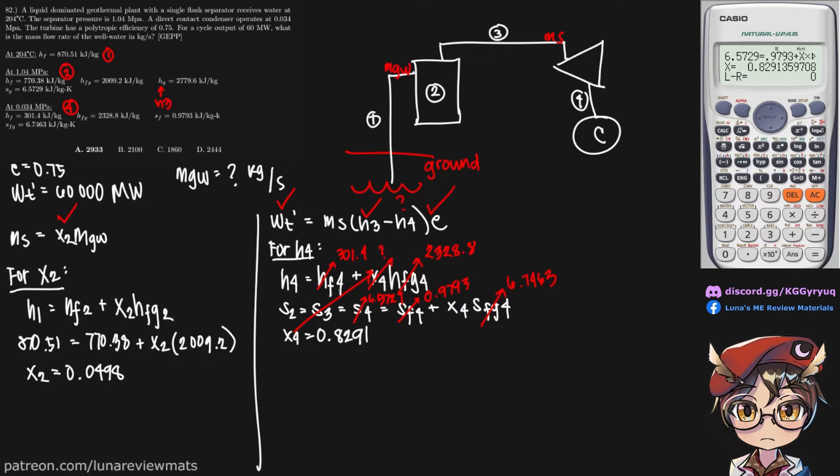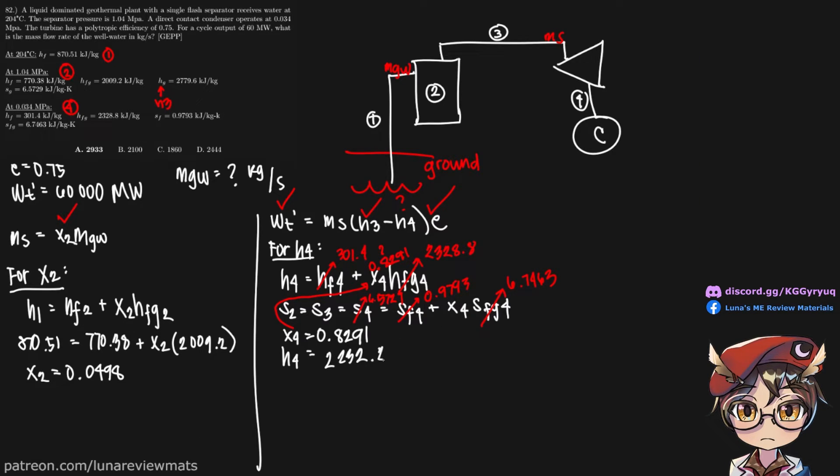So let me draw that so you don't get confused. Alright. That becomes 0.8291. And so H4 can be calculated in our calculator as well. For H4 we get 2232 point 21. Okay. So we now have our H4.